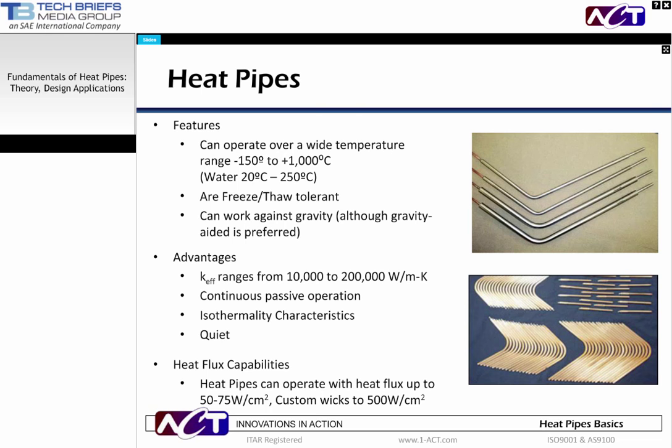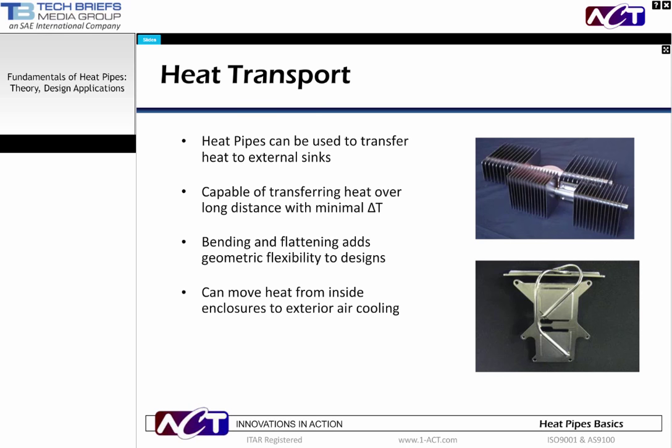Also, with the right wick structure, heat pipes can operate against gravity. That is, they can move heat away from the hot evaporator, even when it is above the condenser. Typically, heat pipes can transfer heat 8 to 10 inches against gravity, although gravity-aided operation is generally preferred. In terms of advantages, since boiling and condensing are occurring at the same temperature, heat pipes can have effective conductivities of 10,000 to 200,000 watts per meter Kelvin. We can contrast that with copper, an often-used conductor, which has a conductivity of around 400 watts per meter K. Other advantages include continuous passive operation, excellent isothermality characteristics, and quiet operation.